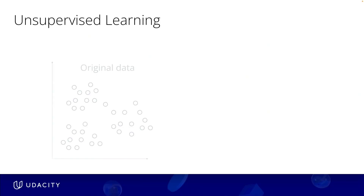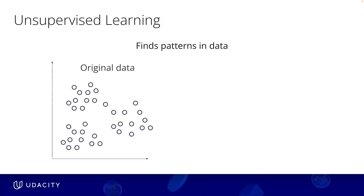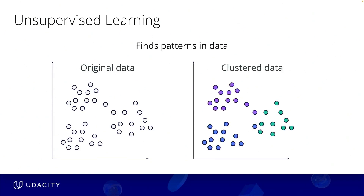Now let's discuss unsupervised learning. This approach focuses on finding patterns and structures within data without pre-existing labels. It excels at identifying hidden relationships, clustering similar data points, and detecting anomalies or outliers in data sets. Unsupervised learning uncovers patterns in data, making it crucial for exploratory data analysis, customer segmentation, and recommendation systems.